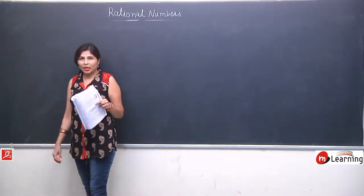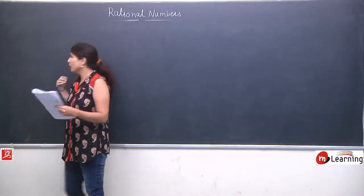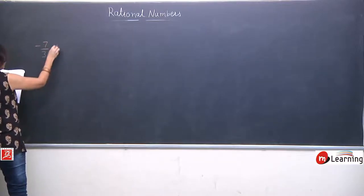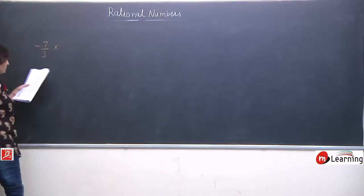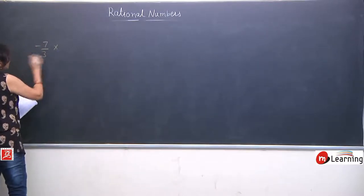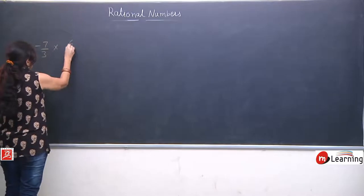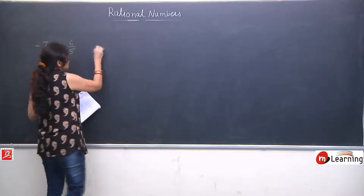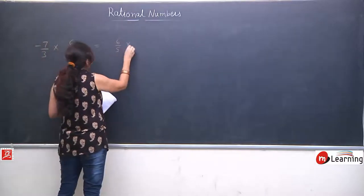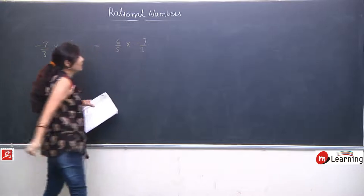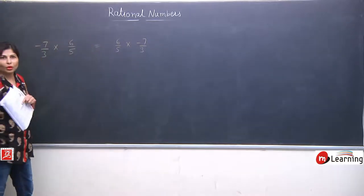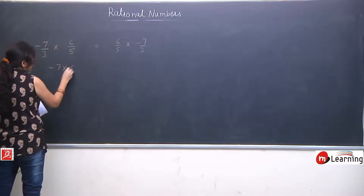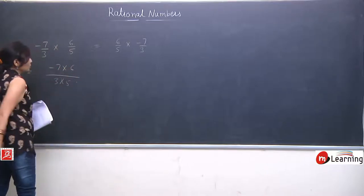Commutative property for multiplication — hum ek do aur examples dekhenge, jisse concept ekdum clear ho jaye, ki jo property hum dekh rahe hain wo kis-kis sign ke liye applicable hai. Commutative law kehta hai — inko exchange kar dijiye, unki place exchange karke check kariye whether they give the same answer or not. Numerator will multiply to the numerator and denominator will multiply to the denominator.